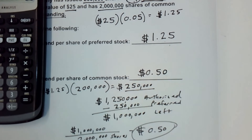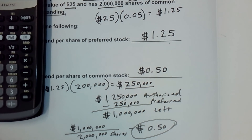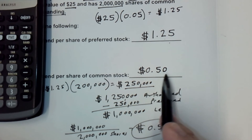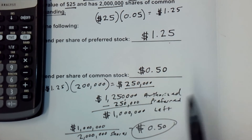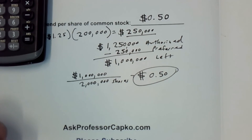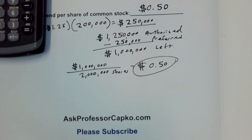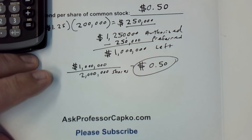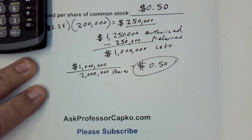To verify: $0.50 per share times 2 million shares uses up the remaining $1,000,000 of dividends. That is how you calculate the dividend per share for both common stock and preferred stock.